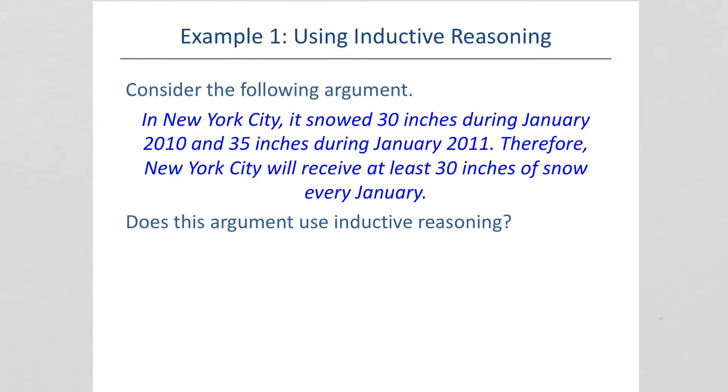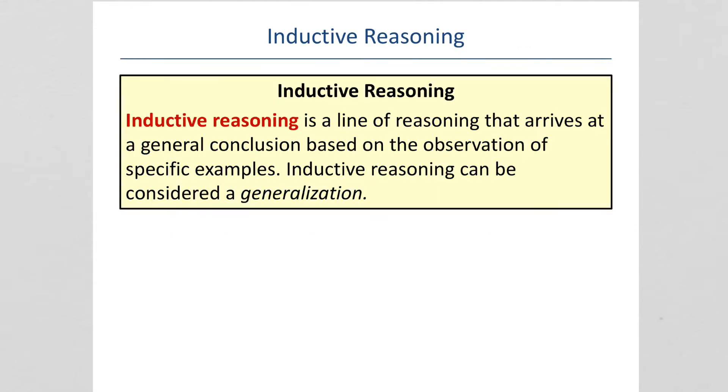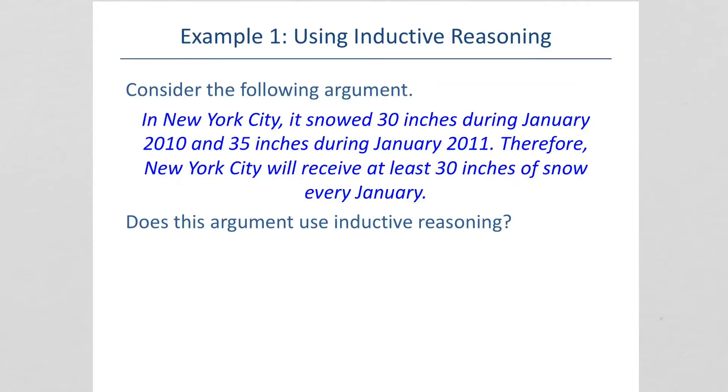So, the argument is very specific. It's specific to January 2010 and January 2011. And it's a very general conclusion that's been made. But it's said that inductive reasoning is a generalization. So this is an inductive argument. Obviously, it's not likely that it's going to snow the same amount every January, but it is inductive.